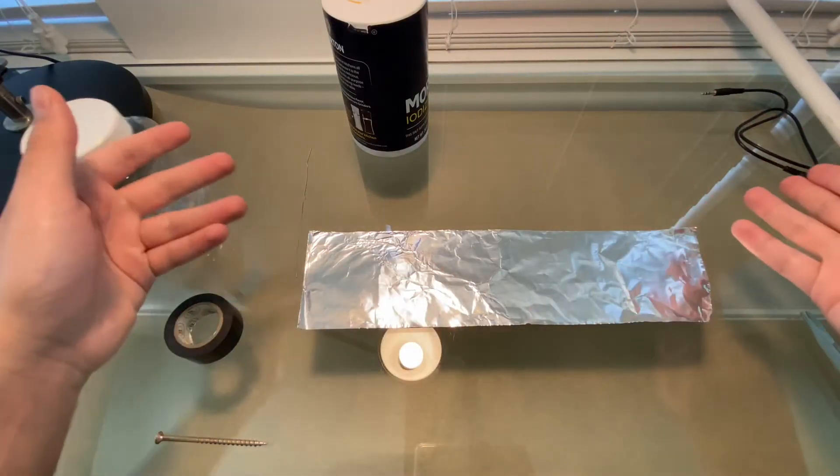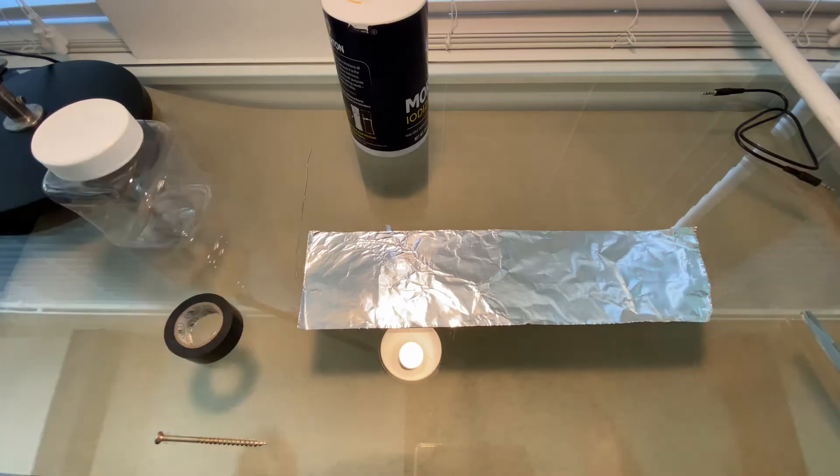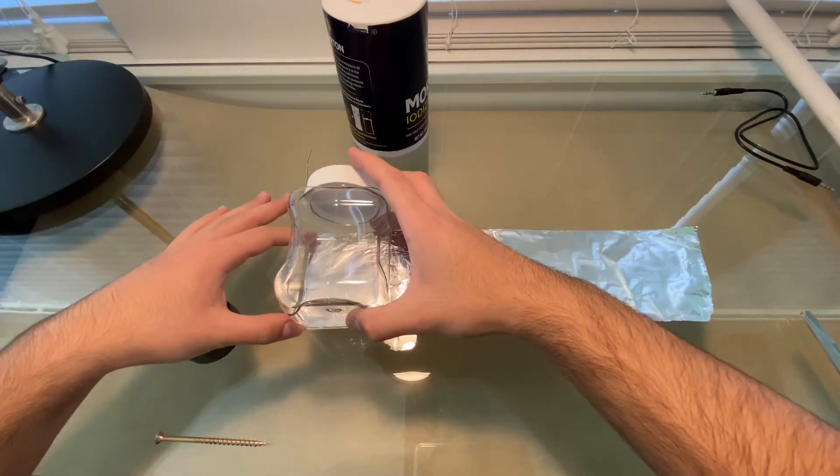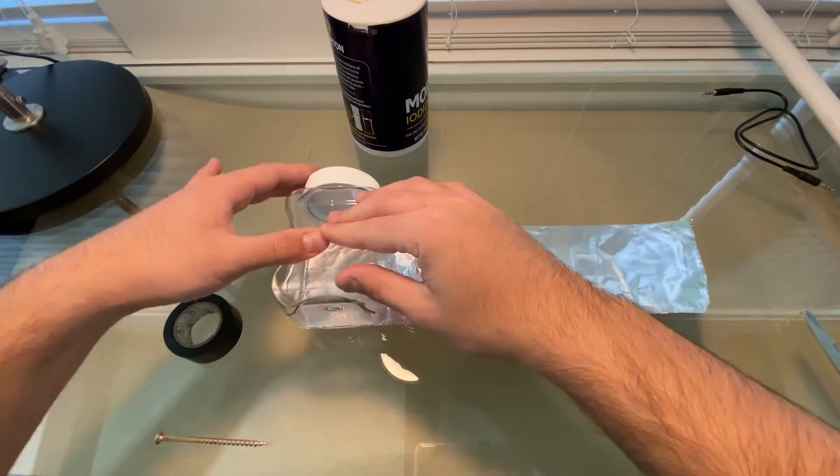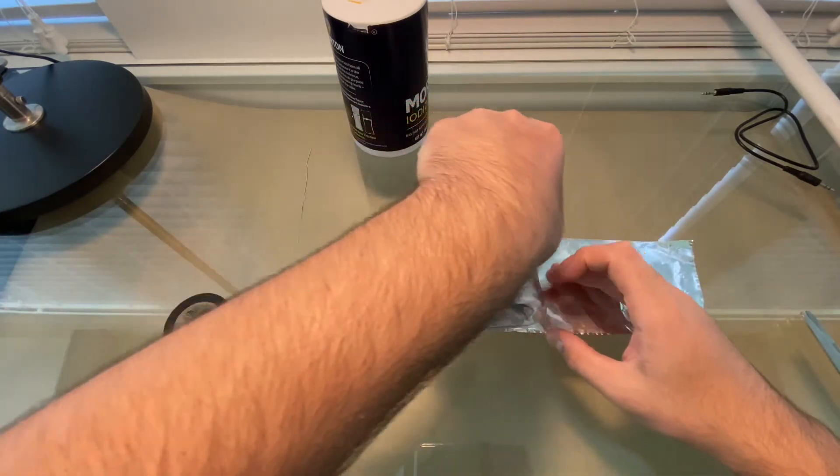You should be left with a simple strip of aluminum foil. So you want to take your jar and put it on the aluminum foil and you want to wrap the aluminum foil around it just like this.